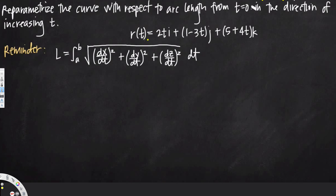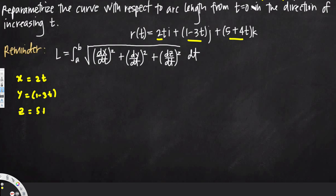This is our given vector function. From this you can see that x, y, and z are the components, and this is the equation we use to find arc length. So from the vector function: x is equal to 2t, y is equal to 1 minus 3t, and z is equal to 5 plus 4t.